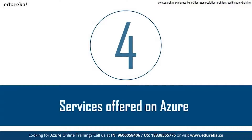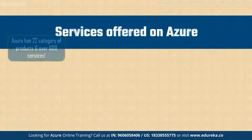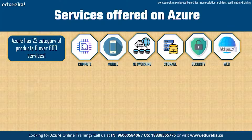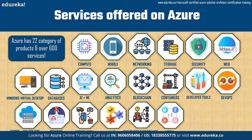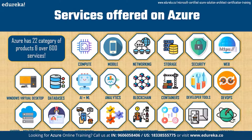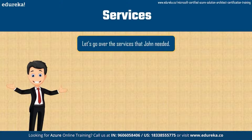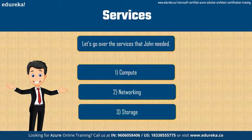In the previous section, I mentioned that Azure has 22 categories of products, but it also has over 600 services. We won't have time to discuss all 600, so homework: go to Azure's website and check out each category. If you have questions, comment below and we'll be happy to answer. John specifically needed three services: compute, networking, and storage. Let's take a look at each one in a little detail.